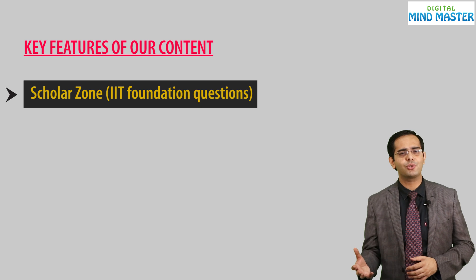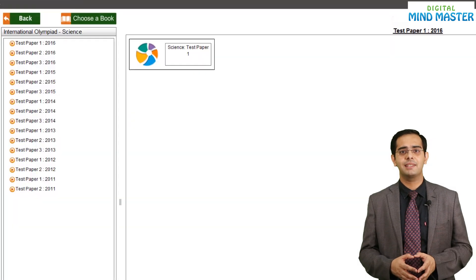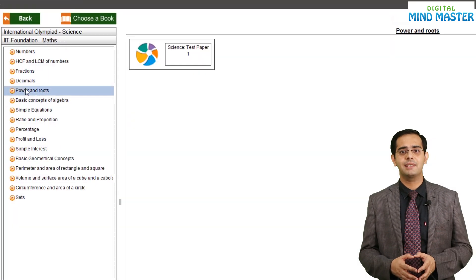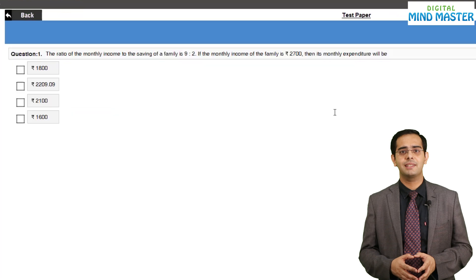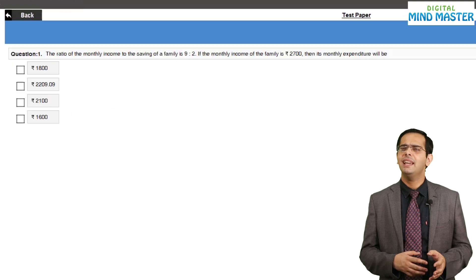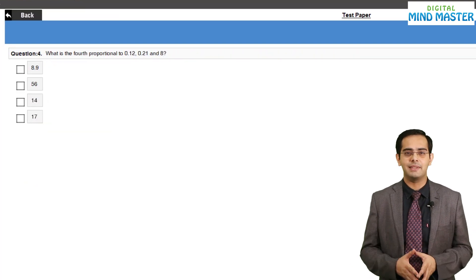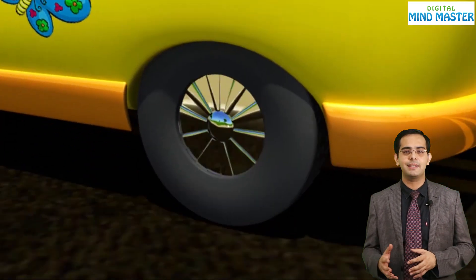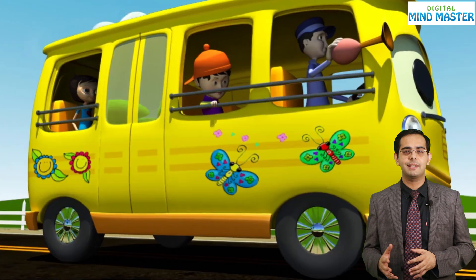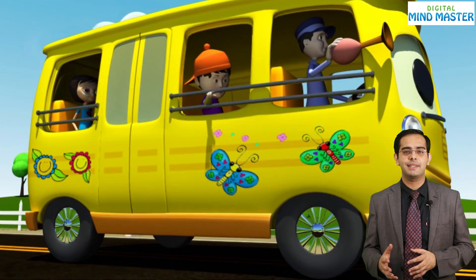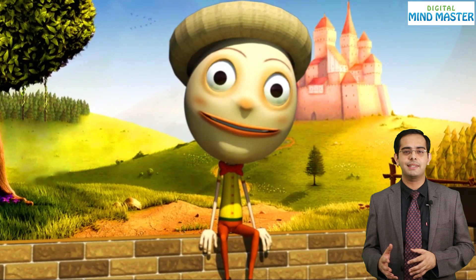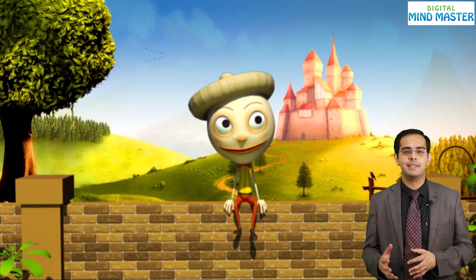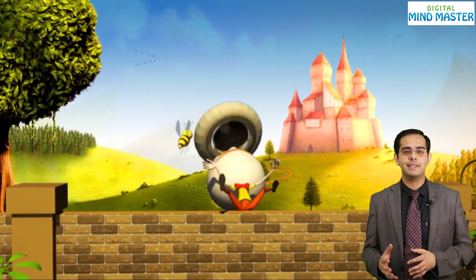Many more features like ScholarZone for competitive exams, many colorful interesting rhymes, games, the wheels on the bus go round and round, Humpty Dumpty sat on a wall, Humpty Dumpty had a great fall. And many more interesting features in our junior section, so that children can enjoy studying. Thank you.